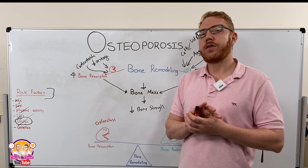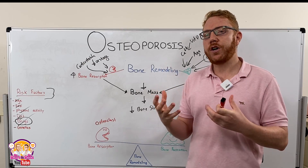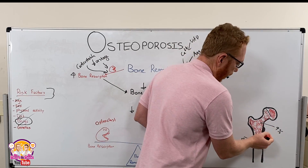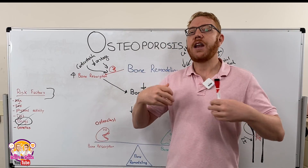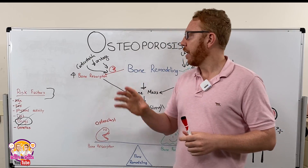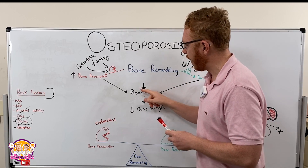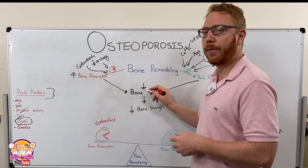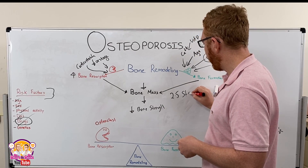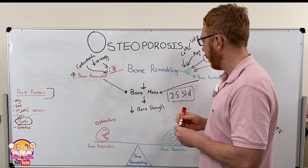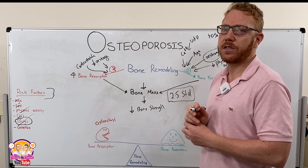These changes predispose us to fractures. The most common fracture location is the vertebra, followed by the neck of femur, then the wrist and ribs. For diagnosis, osteoporosis is defined as a reduction in peak bone mass by at least 2.5 standard deviations from the average.